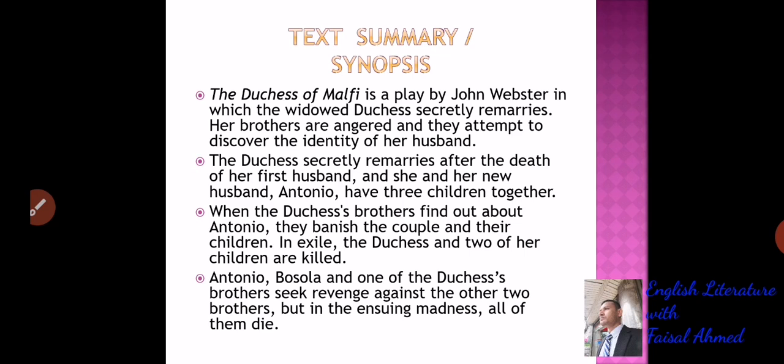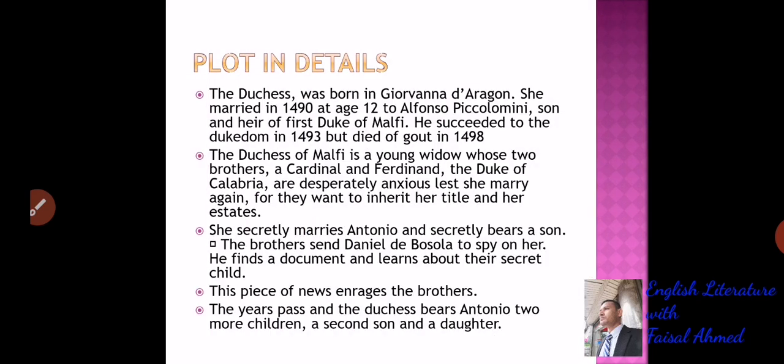She and her new husband Antonio have three children together. When the Duchess's brothers find out about Antonio, they banish the couple and their children into exile. The Duchess and two of her children are killed by strangling. Antonio, Bosola, and one of the Duchess's brothers seek revenge against the other two brothers, but in the ensuing madness all of them die. This is the very short summary; I recommend you to read the full text as it is not so long.